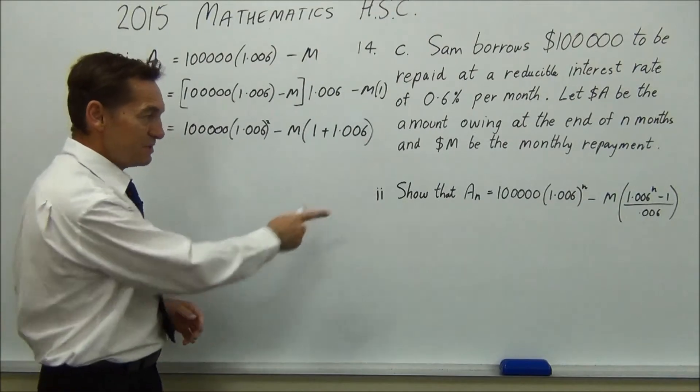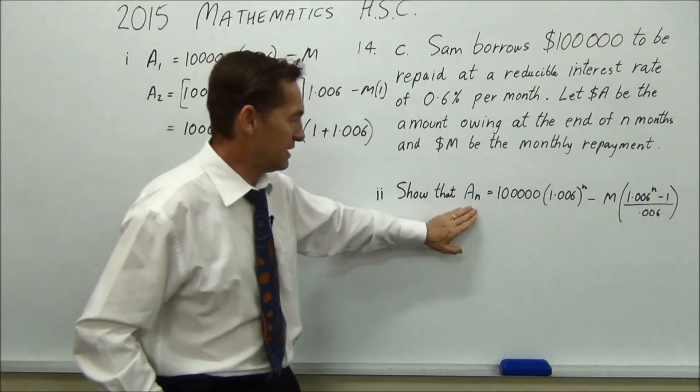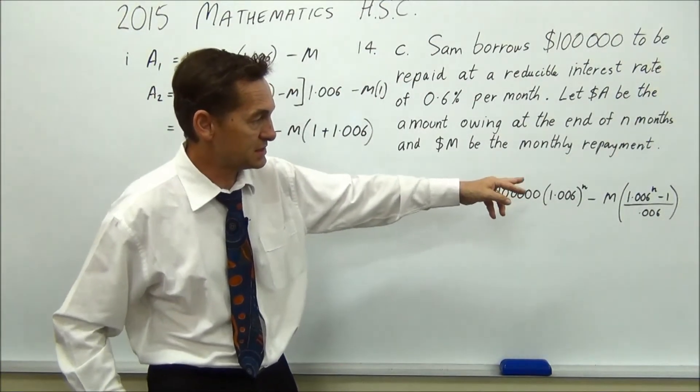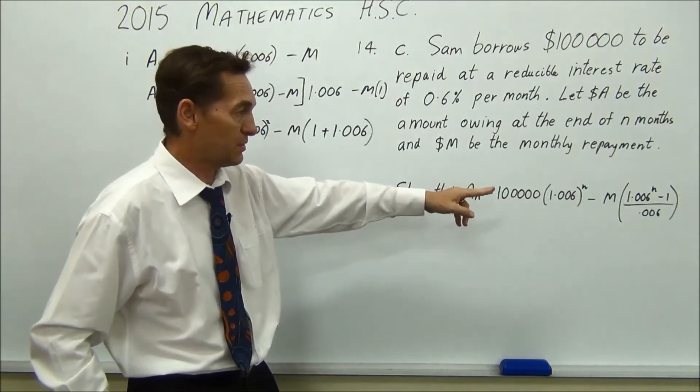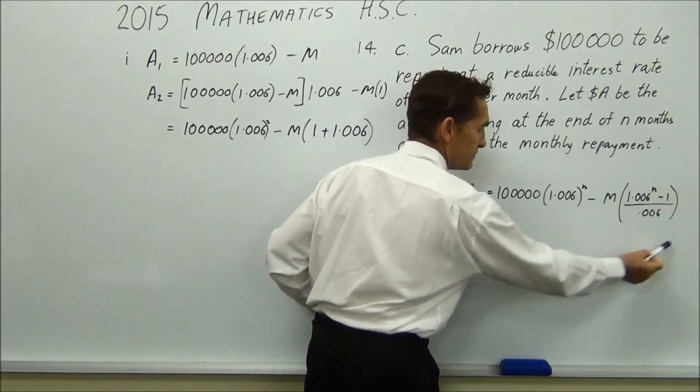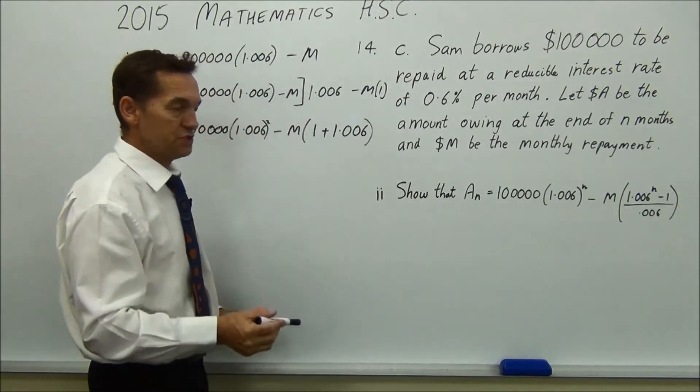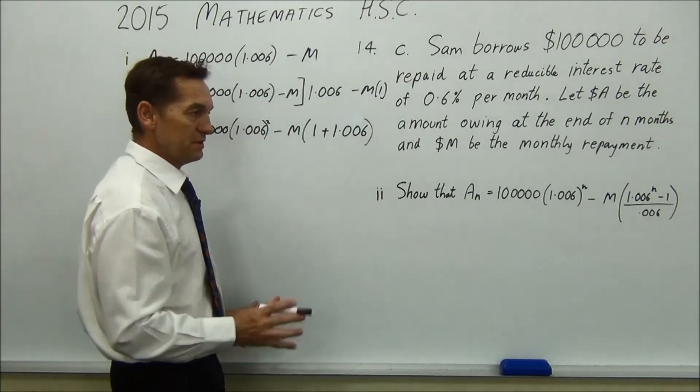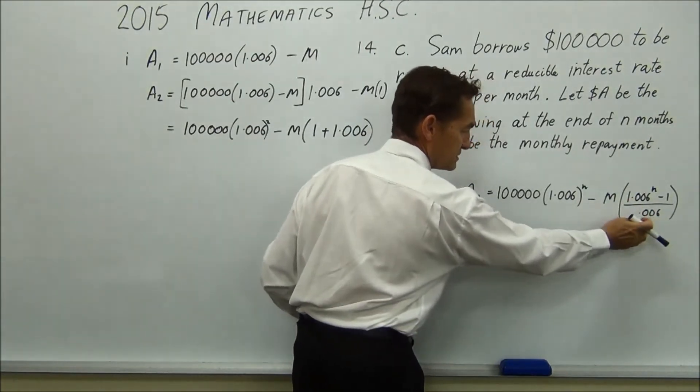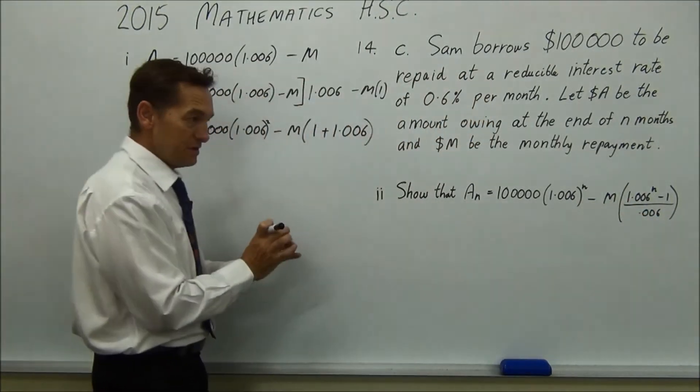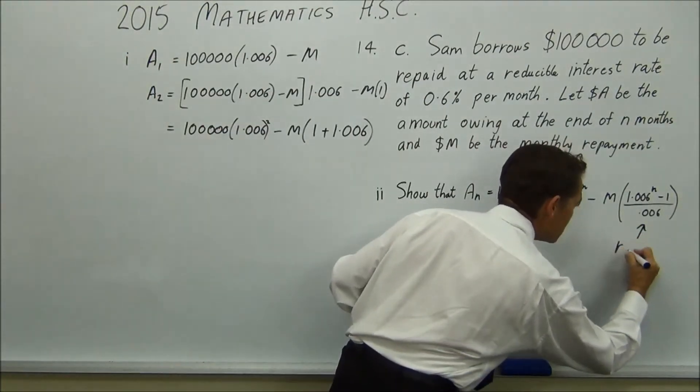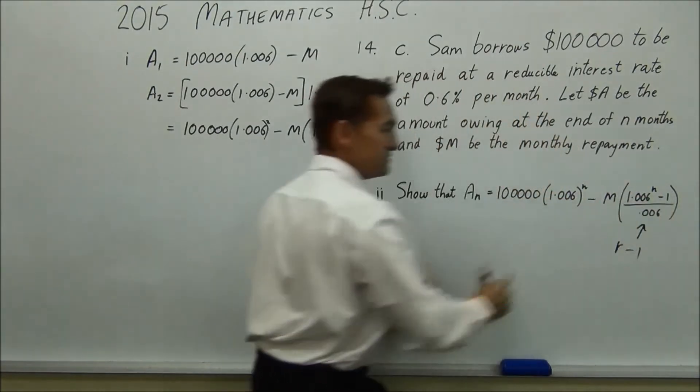G'day again, back for part 2. So part 2, show that An equals 100,000 times 1.006 to the n minus M brackets, 1.006 to the n minus 1 over 0.006. Now you should recognise this form as the sum of a geometric series. The only difference is, instead of having r minus 1 down here, you've actually got just the rest of the rate. So just write a note there, that is r minus 1, 0.006. The rest of it is pretty obvious.